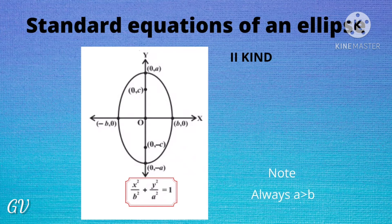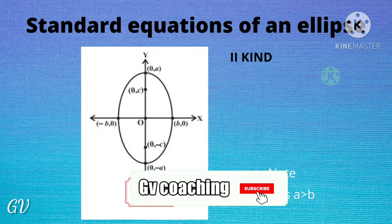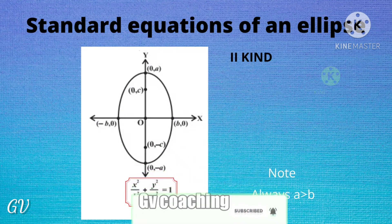Now let's look at the equation of an ellipse for the second kind. When the foci lie on the y-axis, that is the second kind of ellipse, and its equation is x²/b² + y²/a² = 1. Here, the y-intercept is larger, so a is given to the y-intercept and b to the x-intercept, because a is always greater than b.